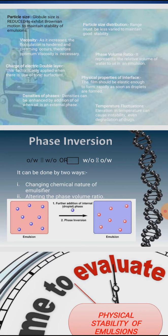The upper limit is 74% of oil that can be incorporated in an emulsion, but this may lead to breaking of the emulsion. This value is referred to as the critical point of phase volume ratio. The critical point is defined as the concentration of internal phase above which the emulsifying agent cannot produce a stable emulsion of the desired type. Beyond the critical point, globules become irregular in shape, leading to coalescence and decreased stability.